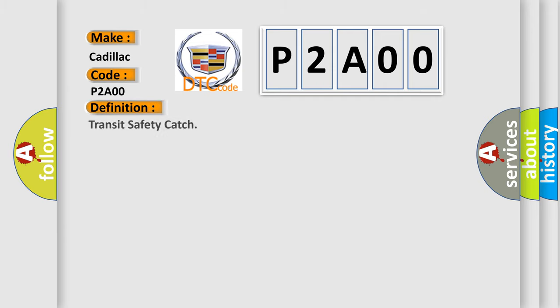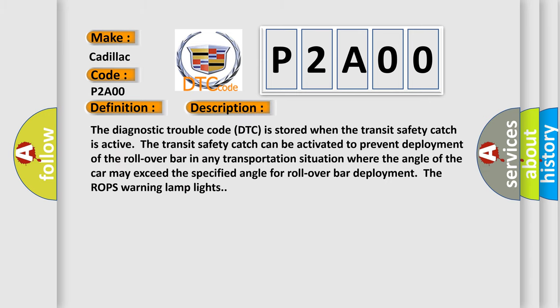The basic definition is Transit Safety Catch. The diagnostic trouble code DTC is stored when the Transit Safety Catch is active. The Transit Safety Catch can be activated to prevent deployment of the rollover bar in any transportation situation where the angle of the car may exceed the specified angle for rollover bar deployment.